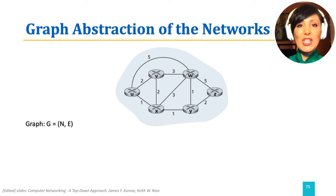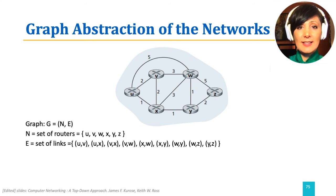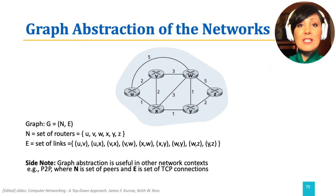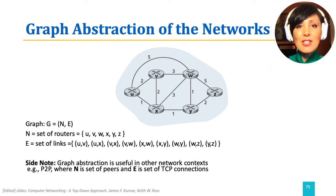We use a graph abstraction to formulate our problem. A graph has a set of N nodes and E links that connect the nodes. Nodes represent the routers in the network; links, depicted by a tuple consisting of two nodes, show the connections between those nodes. Note that graph abstraction with different definitions of N and E can be used in many other contexts. Even in networking, it could be used for abstraction of other networks such as peer-to-peer networks, where N is the set of peers and E is a set of TCP connections.